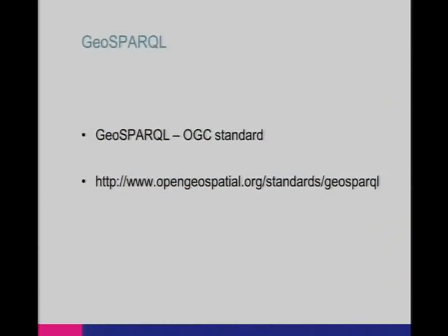When I started off I mentioned that linked data didn't work very well with spatial data. A couple of years ago, GeoSPARQL was standardized by the OGC. GeoSPARQL is a way of embedding geometries — qualitative and quantitative spatial data — into RDF. The way you put a geometry in RDF is to store it as a blob of GML or WKT. Now that there's a standard, people who create the databases that load RDF can start to build a spatial index, and a big database vendor has implemented it in their latest 12c release.